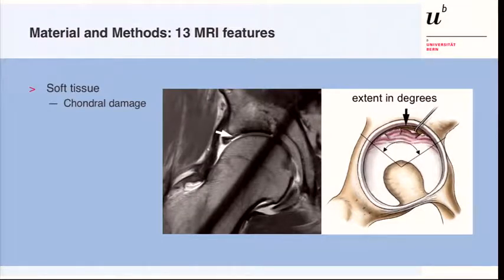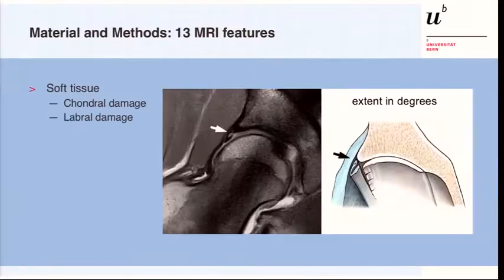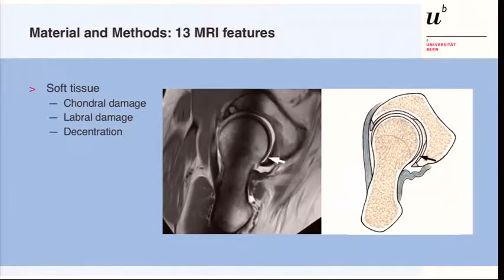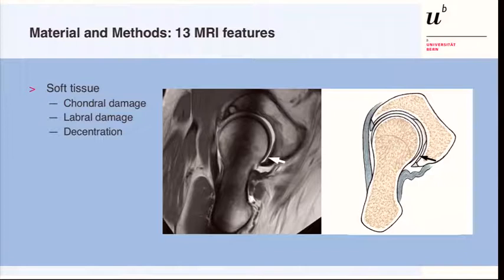We analyzed chondral damage, which had to be clearly identifiable — contrast agent running between the acetabulum and the femur. We evaluated the extent of the chondral lesion in degrees as a sector of the acetabulum. We also evaluated labral damage quantified in degrees, and what we call decentration — contrast agent filling posteriorly inferiorly — which can indicate anterior subluxation as in dysplastic hips, or a defect causing the femoral head to migrate into a joint space narrowing anteriorly.